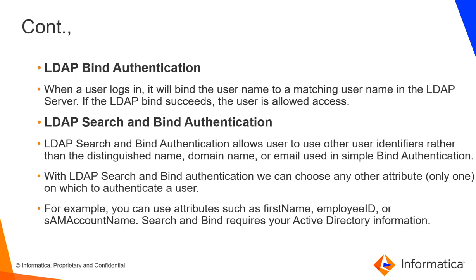In simple terms, there should be a user in the LDAP layer and a matching user in MDM — both users must match for the bind to happen and for the LDAP server to allow authentication. The other method is LDAP Search and Bind Authentication. This comes into picture when the customer wants to use a different user identifier rather than a distinguished name, domain name, or email used in simple bind. With Search and Bind, you can choose any other attribute to authenticate the user — for example, first name, employee ID, or SAM account name. Search and Bind requires your active directory information.